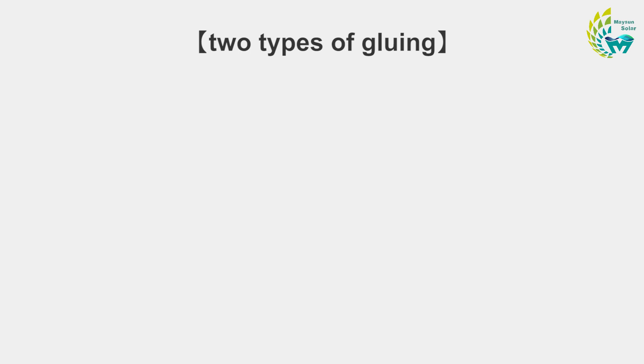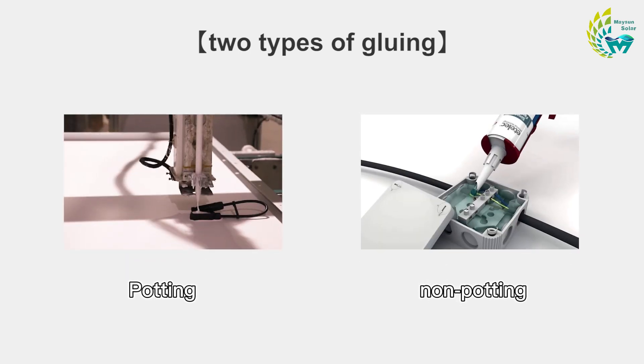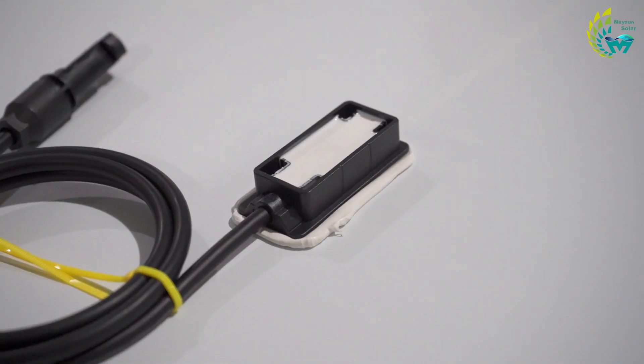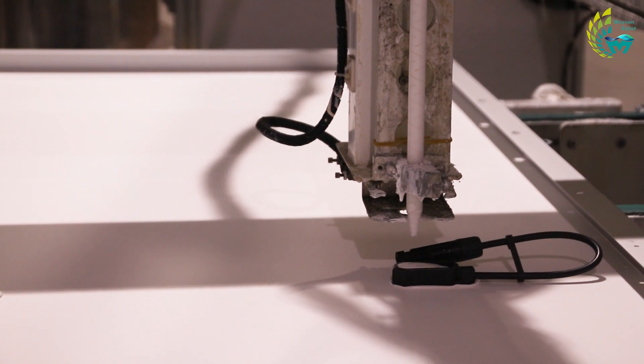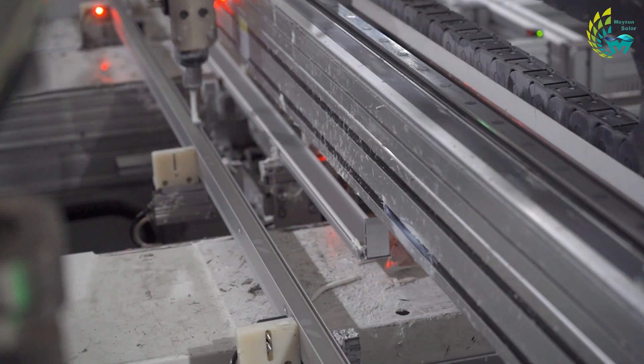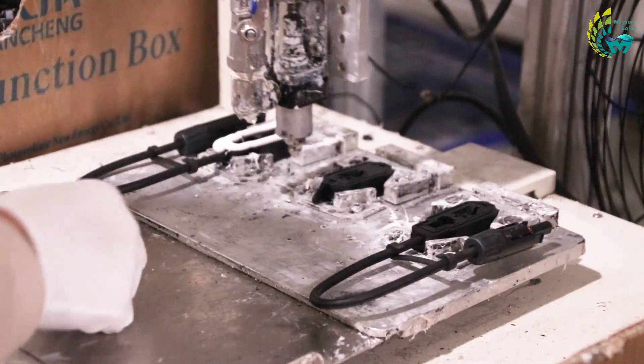The junction box has two types of gluing, which are potting and non-potting type. Both can be used to enhance the durability of the junction box. As a key material, the sealing silicone rubber can fully fill the gap between the components, such as between the frame and the laminate, or between the junction box and the backplane.